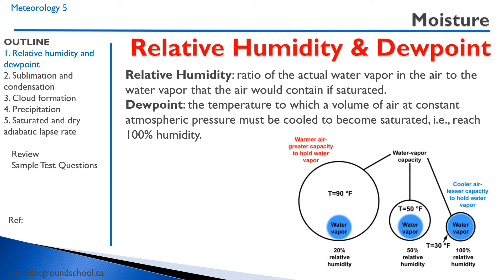These are important concepts because we can do a lot of weather predicting just by being familiar with relative humidity and dew point. The relative humidity is the ratio of the actual water vapor in the air to the water vapor that the air would contain if saturated. There's a maximum amount of water vapor a parcel of air can hold — beyond that, you end up with precipitation or condensation. The dew point is the temperature to which a volume of air at constant pressure must be cooled to become saturated, reaching 100% humidity. Warmer air has a greater capacity to hold water than cooler air.